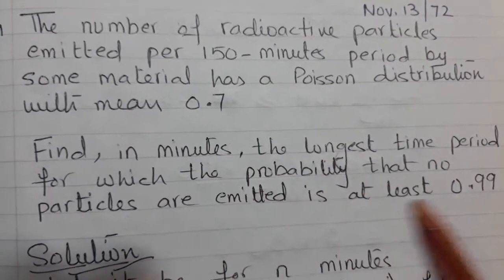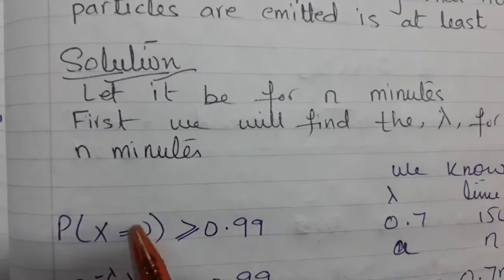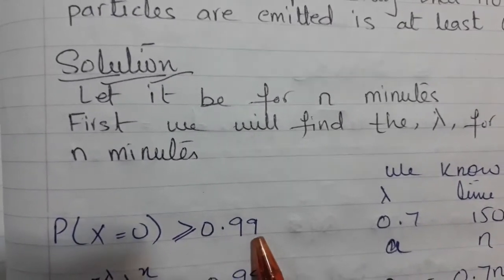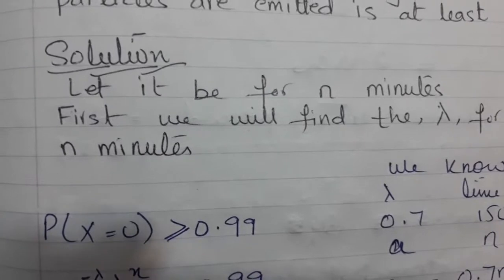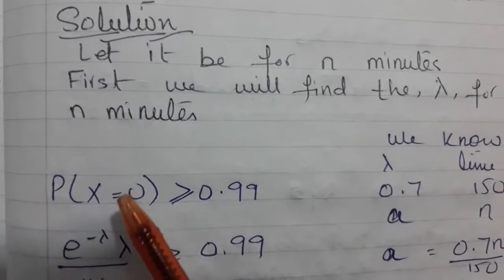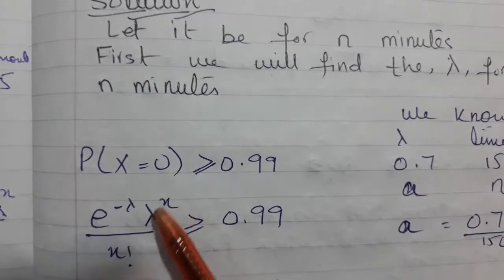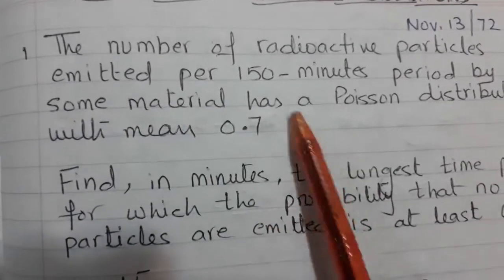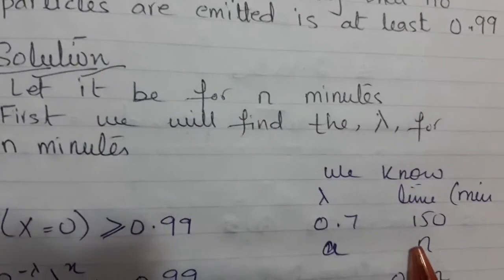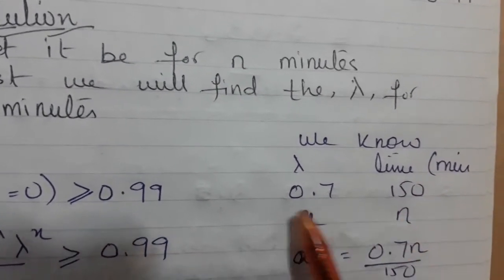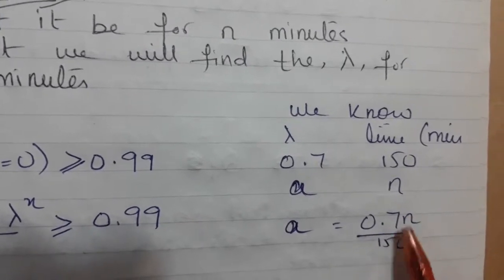What does the question mean and how do you write the inequality? The meaning is: the probability that no emission happened is at least 99%. The lambda is given per 150 minutes, but you have to find it for n minutes because n is unknown. Using the unitary method, the value of lambda will be 0.7n over 150.